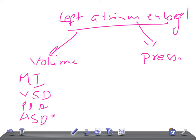Due to pressure overload, there is enlargement of the left atrium — that is mitral stenosis, and myxoma of the left atrium.